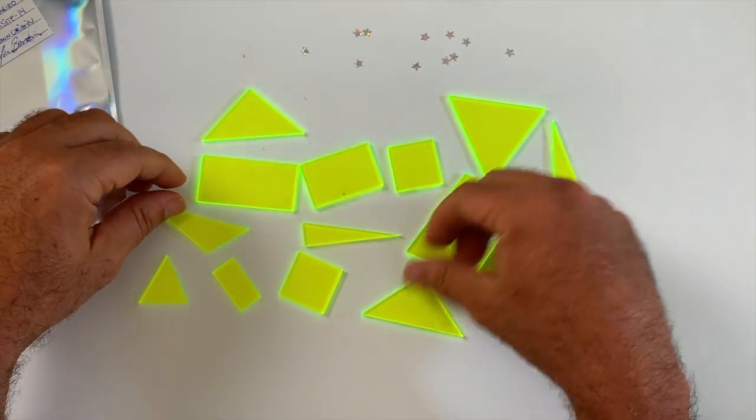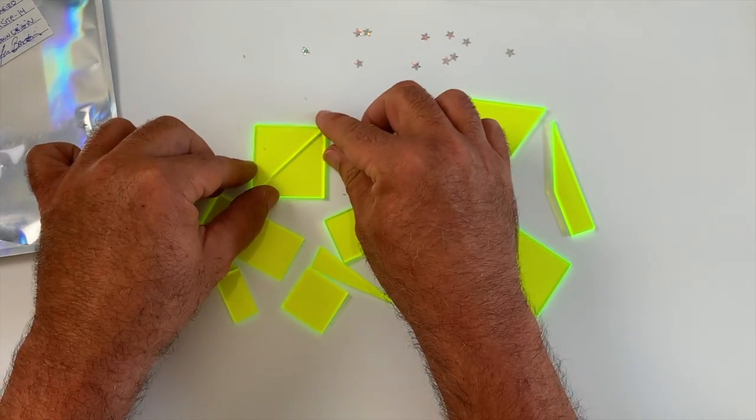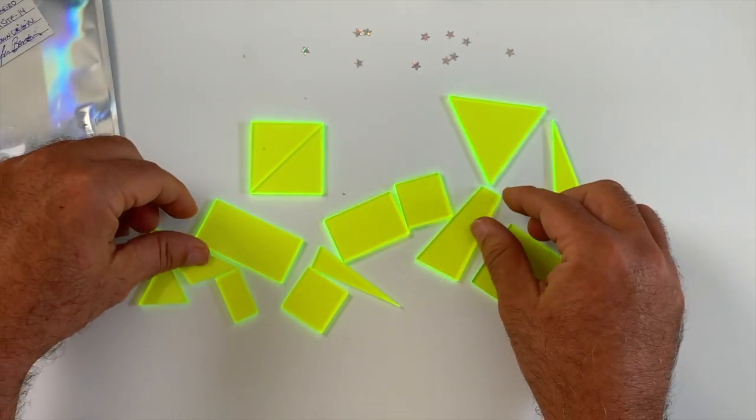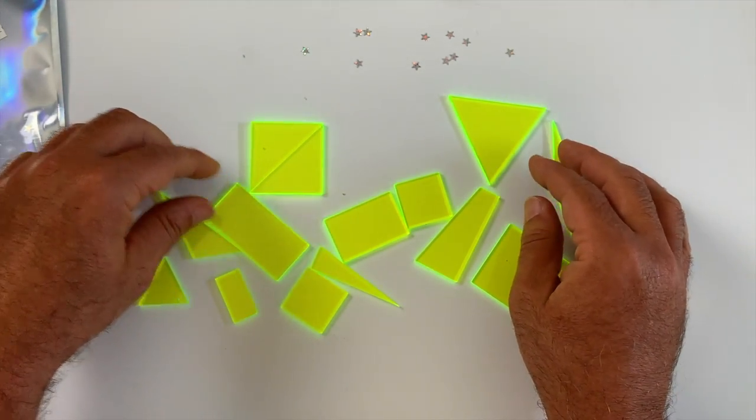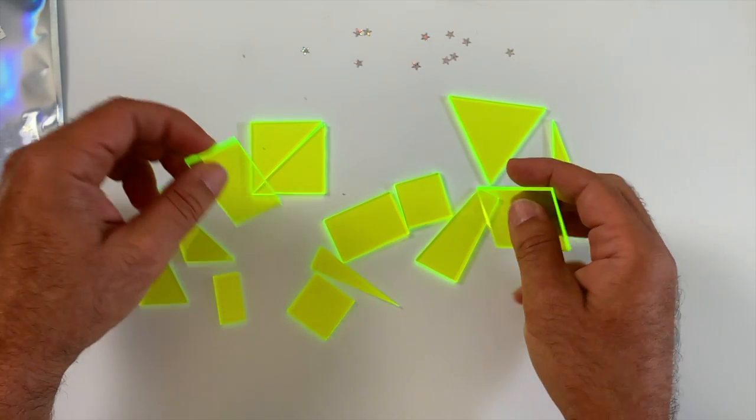The idea is to make a square. A lot of people will begin with the triangles. You know, that's not it. You've got to use 13 of the 14 pieces. So yes, that is a square but that's not the solution. Neither is this, right? It's a square.